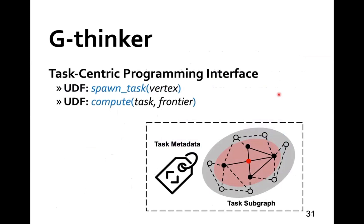Here is the task-centric programming model of G-Synker. The first user-defined function specifies how a task is spawned from an individual vertex. The second user-defined function specifies how a task grows its subgraph from surrounding vertices' adjacency lists, which are pulled into the frontier array the last time the compute function was called. A task calls the compute function in iterations to grow its subgraph until all needed data are ready, after which the task mines the constructed subgraph. When vertices are being pulled, the task is suspended so that CPU cores can be released to process other tasks.